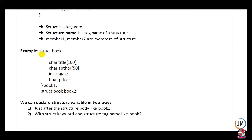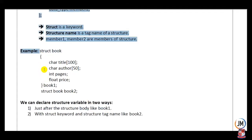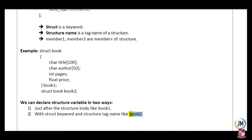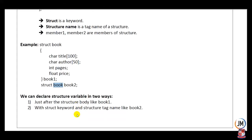In this example, there is one structure variable. A structure variable can be declared in two ways: the first way is just after the struct keyword, and the second way is by using the struct keyword along with the structure tag name to declare it.